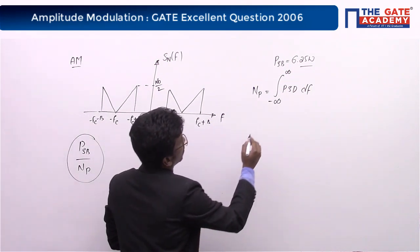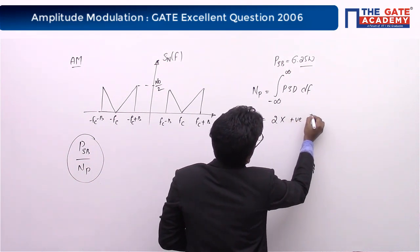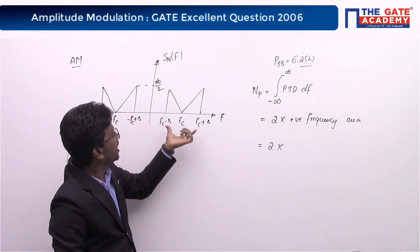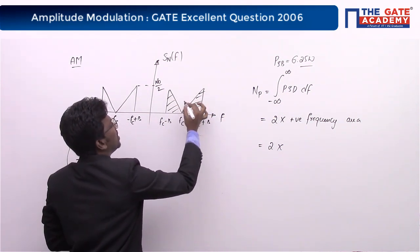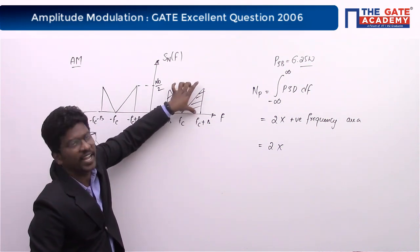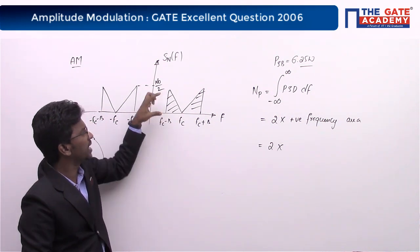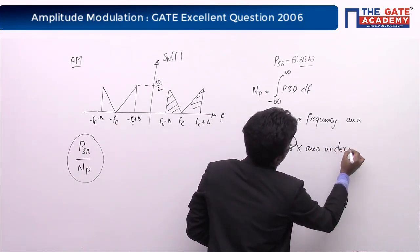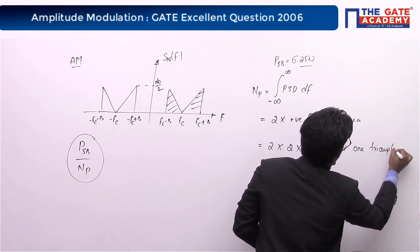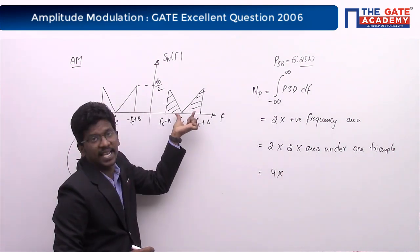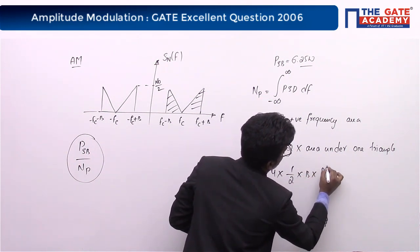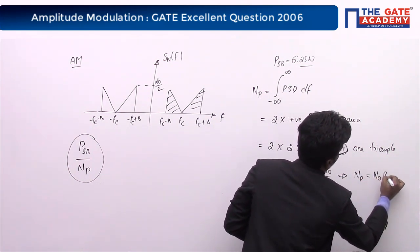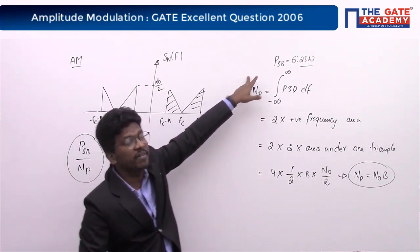In the positive frequency region, there are two triangles — each having base B and height N₀/2. Since they are symmetric, total noise power = 4 × (area of one triangle) = 4 × (1/2 × B × N₀/2). Calculating this gives noise power = N₀ × B.